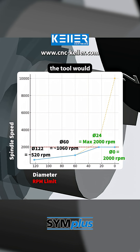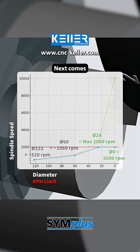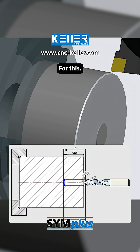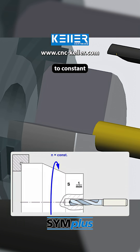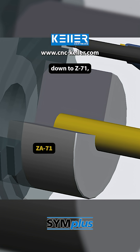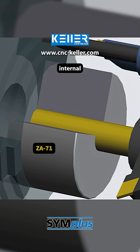At that point, the tool would no longer cut effectively but only push material aside. And since this spot will be drilled afterward anyway, the path to the axis is skipped. Next comes the drilling cycle, G84. For this, the mode switches to constant spindle speed with G97. The core hole is drilled down to Z71, forming the basis for the internal machining.